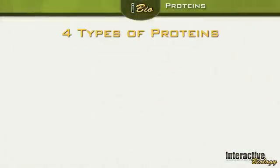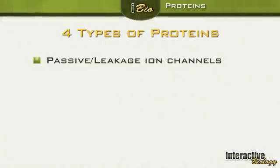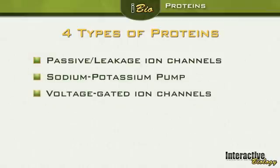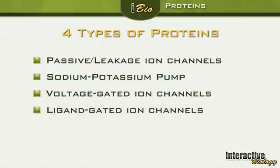The four types of proteins are: number one, passive or leakage ion channels; we also have the sodium-potassium pumps; we have voltage-gated ion channels; and lastly we have ligand-gated ion channels. I'm going to take these one at a time and look at how exactly they work. It's going to get a bit technical, but just follow along and try to understand how these ion channels function.